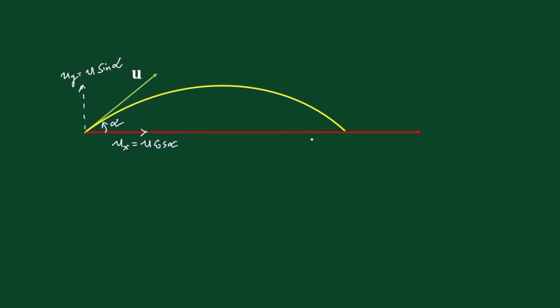In this question it is clear the medium has an ability to exert a resistive force, and the resistive force is k times the velocity as given in the question. Consider the body is projected and it has reached a certain point where its velocity is v, and the direction of velocity is given by the tangent. We can take that velocity as vector v.